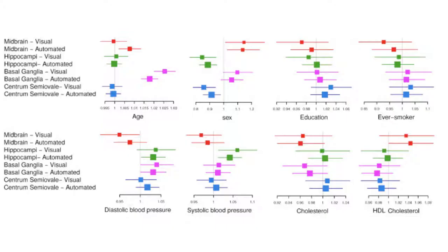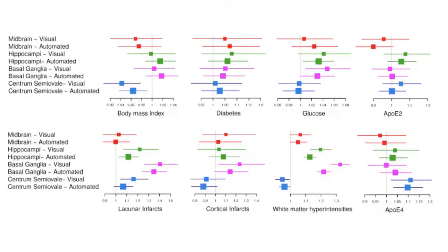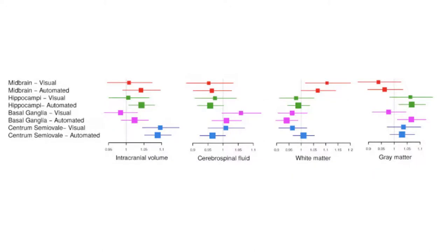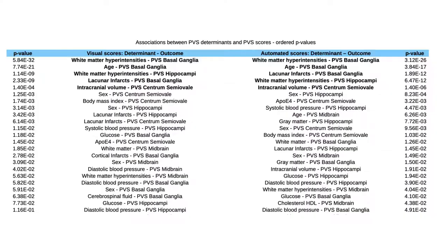The association between 20 determinants of PVS, including aging, and the automated scores were similar to those between the same 20 determinants and the visual scores. We concluded that this method may replace visual scoring and facilitate large epidemiological and clinical studies of PVS.